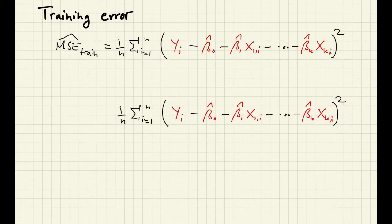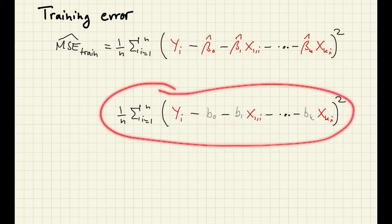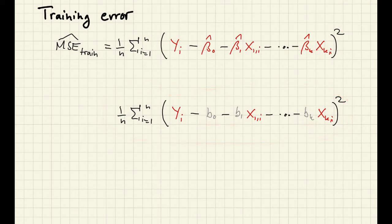So if I go ahead and replace these beta hats by generic coefficients b0, b1, through bk. Now if I wonder what values I have to assign to those to make this expression as small as possible on the training sample, then the answer is of course I have to choose these values.